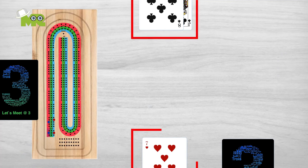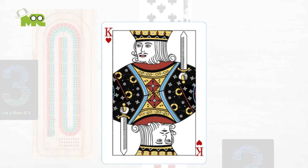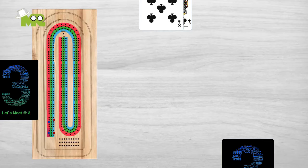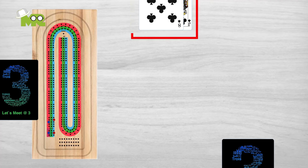Players continue the game with the remaining cards in their hands. This process repeats until all cards have been played. In a situation where one player runs out of cards before their opponent, the other player continues playing and scoring until all their cards have been played.